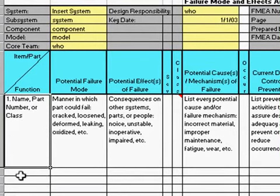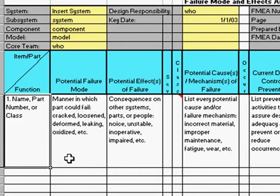You would indicate the part in your first column — this might be a tire or a knob on a baby crib. In the next column, you would indicate the manner in which your part could fail. For instance, the tire could blow or the knob on the baby crib could come loose.